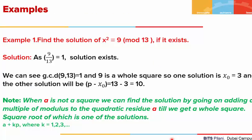Let's look at some examples. In the first example, we are asked to find the solution of X squared is congruent to 9 mod 13, if the solution exists. We will first check whether a solution exists by finding the Legendre symbol (9/13). We know that 9 is a perfect square, so the value of the Legendre symbol is 1. The solution exists.